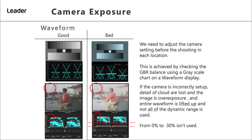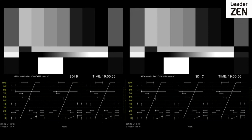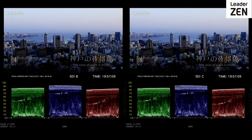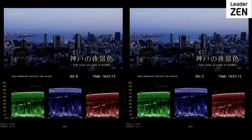As can be seen here, from 0 to 30% isn't used. As well as allowing you to correctly expose a camera, the waveform display allows you to correctly match two camera sources, as can be seen here by the simultaneous picture and waveform display from two camera sources — thus ensuring that the two cameras are perfectly matched and reducing the requirement for corrective measures in post-production.